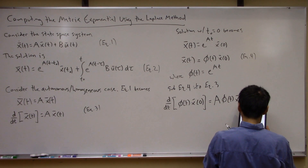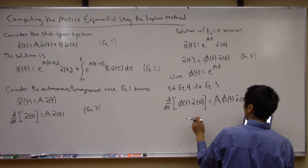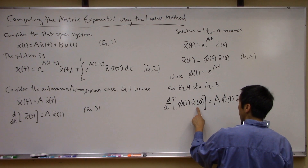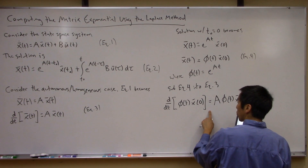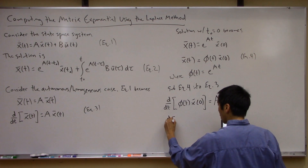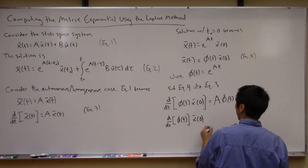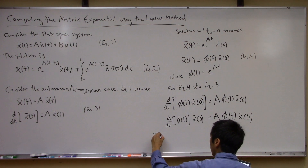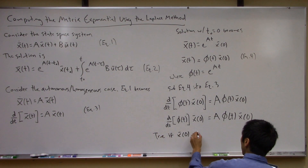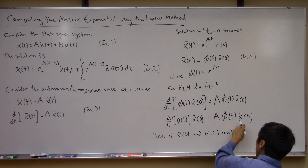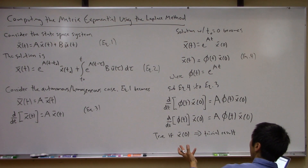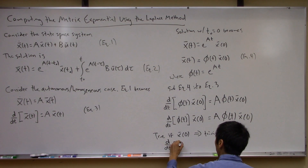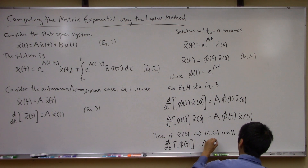This would obviously need to be true. On the left-hand side, this is a time rate of change of the state transition matrix, which is a function of t, but x(0) is just an initial condition so it can come out of the derivative. So we can write this as [d/dt of phi(t)] times x(0) equals A times phi(t) times x(0). For this to hold for any non-zero initial condition, we need d/dt of phi(t) to equal A times phi(t).